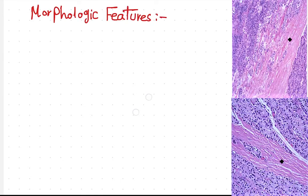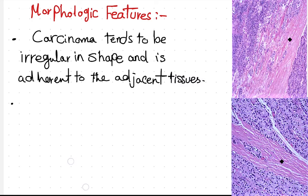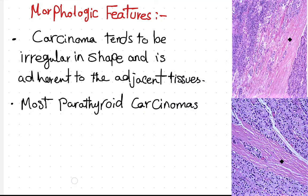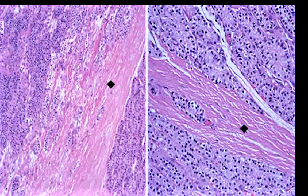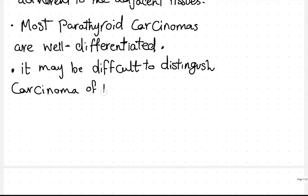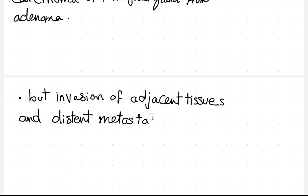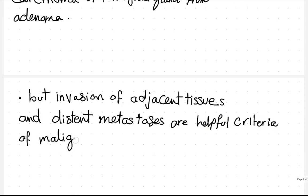Morphologic features. Carcinoma tends to be irregular in shape and is adherent to the adjacent tissues. Most parathyroid carcinomas are well differentiated. It may be difficult to distinguish carcinoma of the parathyroid gland from an adenoma, but local invasion of adjacent tissues and distant metastases are helpful criteria of malignancy in such cases.